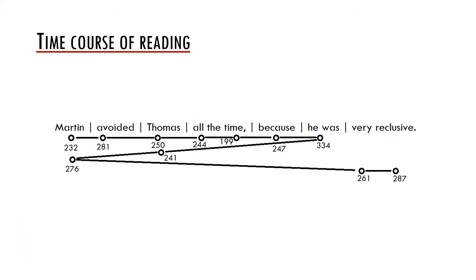This is a made-up example of a scanpad representation of a process of reading of the sentence Martin avoided Thomas all the time because he was very reclusive. The dots represent fixations and the numbers their length in milliseconds. The vertical bars delimit the analyzed regions in the sentence.